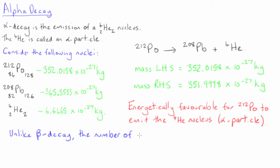Unlike beta decay, in this case the total number of protons is the same on each side, as is the number of neutrons.